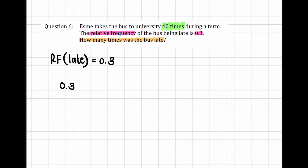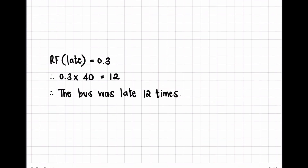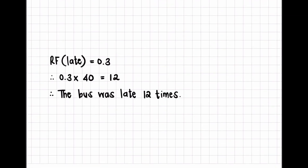To calculate the number of times, I would say 0.3 — the relative frequency of the bus being late — multiplied by the 40 times. 'Of' is multiplication. 0.3 of the 40 times gives me an answer of 12. So we know that the bus was late 12 times. We took the 0.3, multiplied it by the number of times the bus was taken during the term, and that gave us the bus being late 12 times.